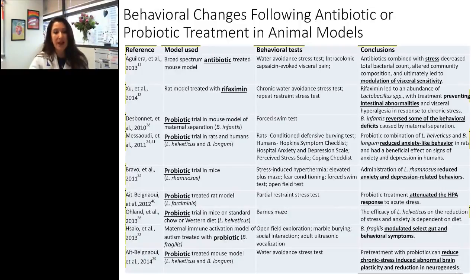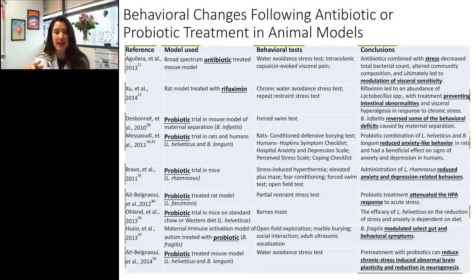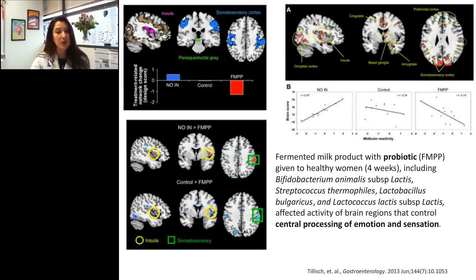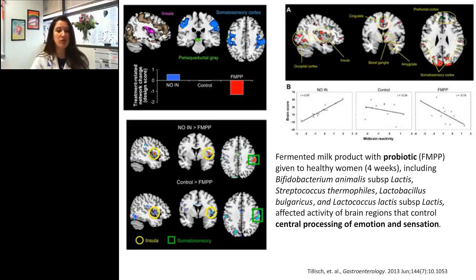There have been many compelling studies on affecting behavior through microbial manipulation — via antibiotic or probiotic administration in animal models of both anxiety and depression. Clinical studies in human subjects have been more sparse, but evidence is growing. In one study, healthy women given a probiotic drink for just four weeks showed alterations on resting-state MRI in areas of the brain responsible for central processing of emotion and sensation.